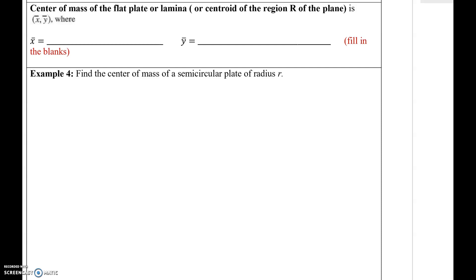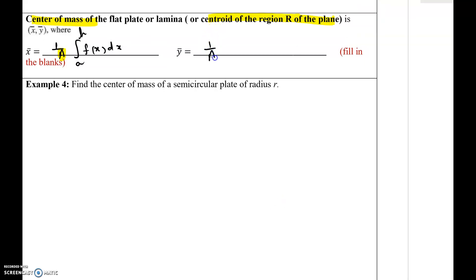This video is a continuation of the previous video on concept 2. This is about the center of mass of a flat plate or lamina, which is the centroid of the region R of the plane. This is given by (x-bar, y-bar), where x-bar is given by the formula 1 over A, integral from a to b of f(x) dx, where A stands for the area of the plate or thin lamina. For y-bar, the y-coordinate of the centroid is 1 over A, integral from a to b of one-half of [f(x)]² dx. Again, A denotes the area of the thin plate.